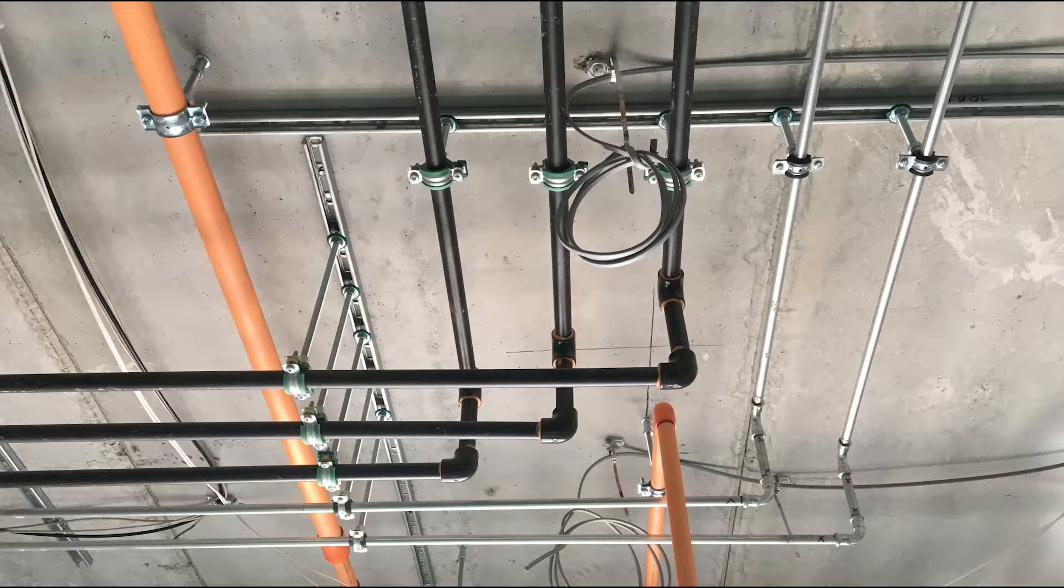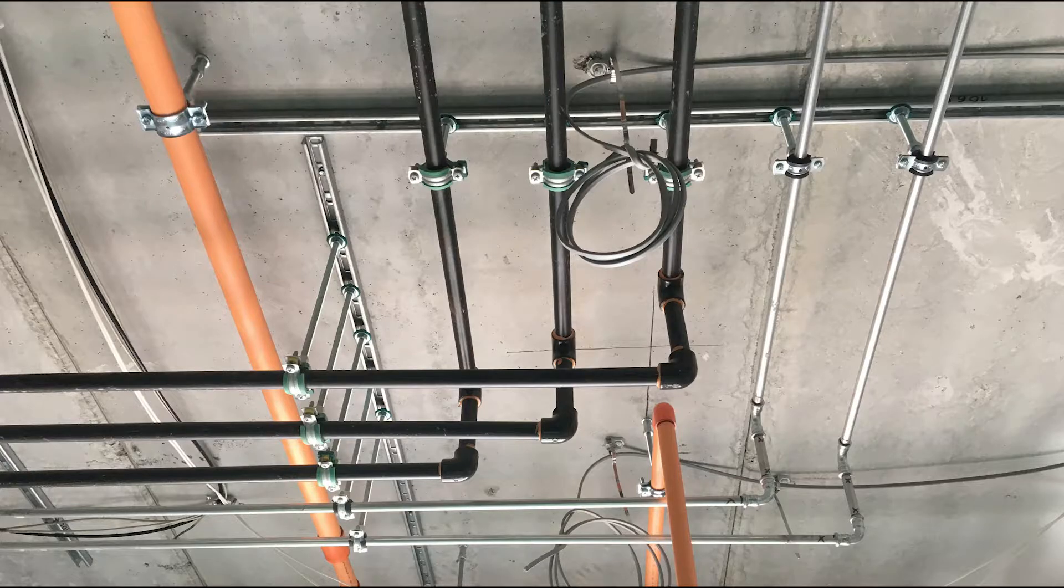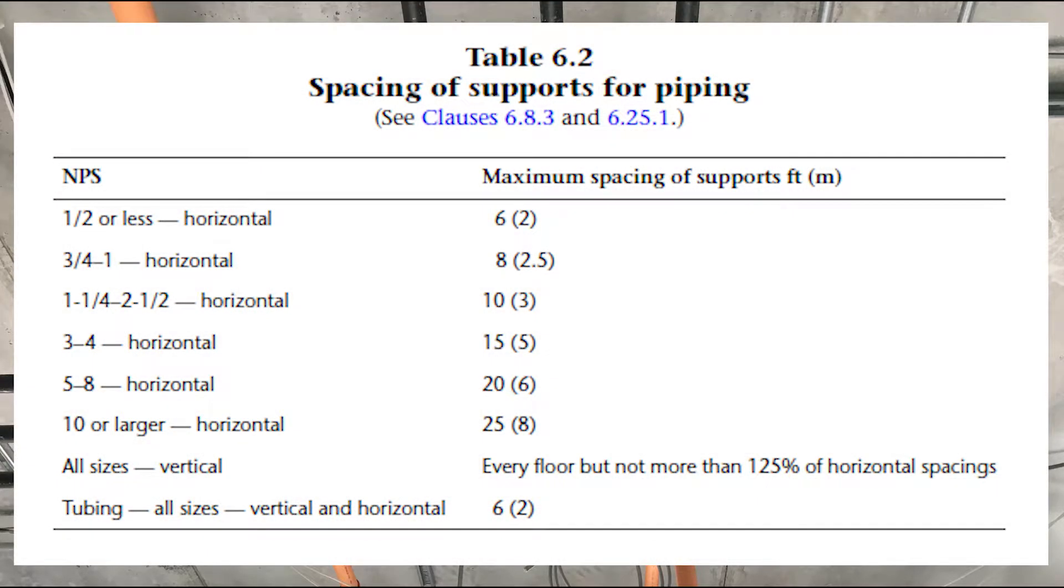All types of gas piping need to be adequately supported. In order to do this we need to look in the codebook under table 6-2. Table 6-2 talks about the different sizes of pipe and the maximum spacing between supports.